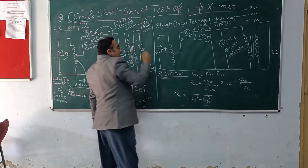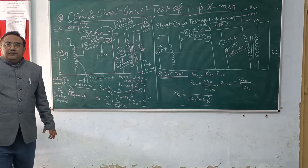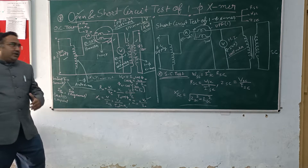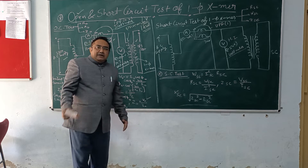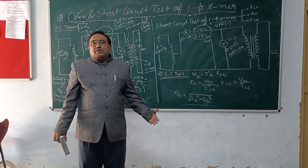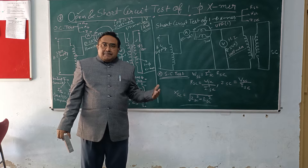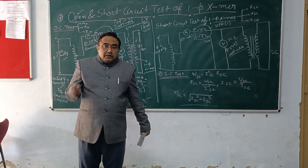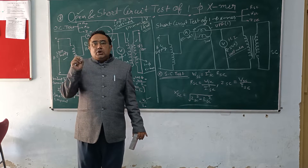Here we have a transformer of turn ratio 1:1 - that is, the number of turns on the primary and number of turns on the secondary are the same. But in general, when you go to the practical field, you will find the primary side is the low voltage side and secondary side is the high voltage side, or vice versa. In that case, the open circuit test is always performed on the low voltage side.